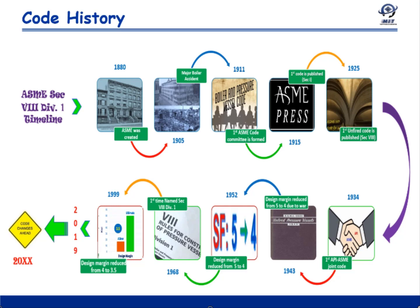This forced the authorities, especially in Massachusetts, to issue their first rules in 1907. In 1911, a standards committee was formed which was later known as the BPVC committee.